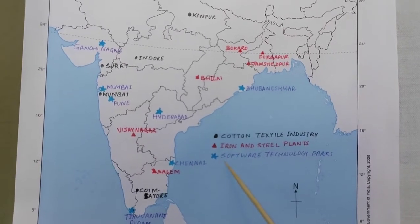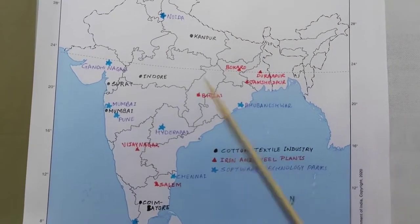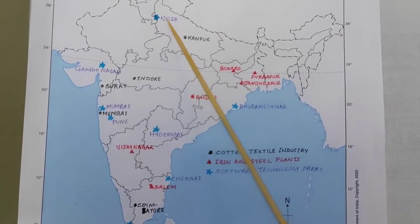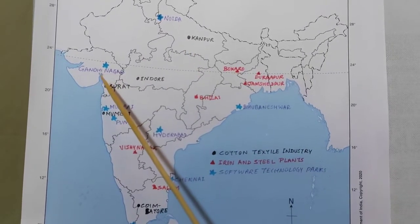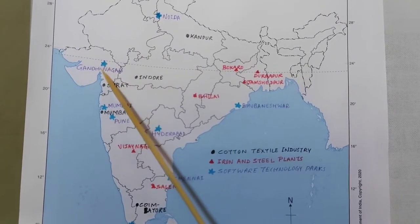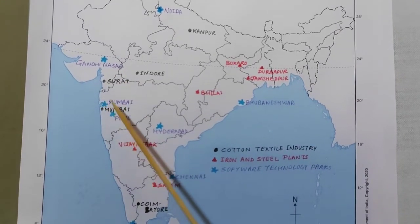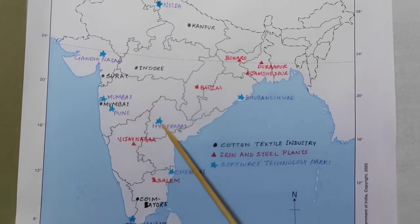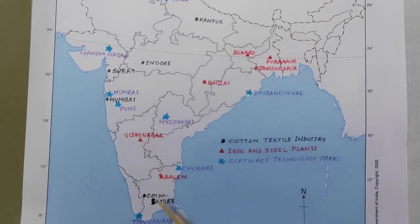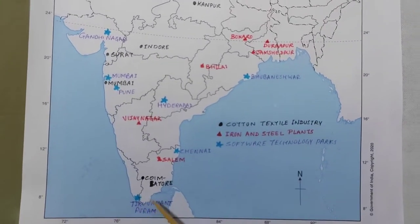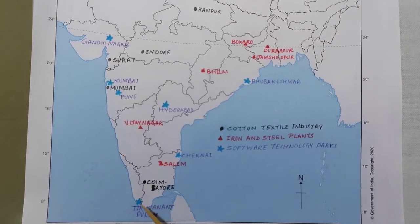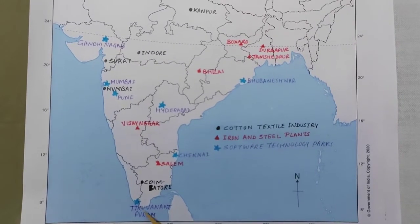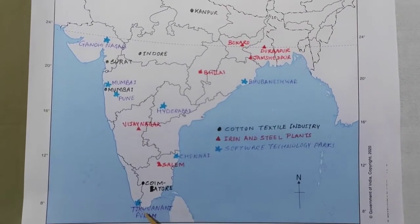Next are the software technology parks, shown with blue stars. At the Noida–Delhi–Haryana border, mark Noida's software technology park. Gandhinagar, below the Tropic of Cancer in Gujarat. Then Mumbai, and to the south-east of Mumbai mark Pune. Hyderabad, which is in Telangana. And then Thiruvananthapuram, which is at the southernmost tip of Kerala — not in Tamil Nadu — so be very careful while marking that software technology park.